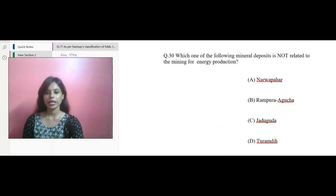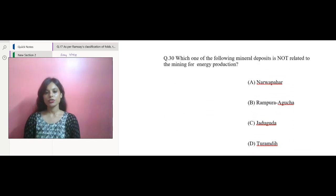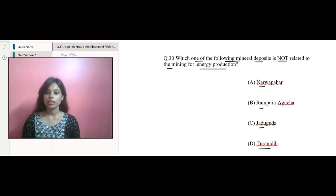Let's move to the next question. Which one of the following mineral deposits is not related to mining for energy production? We have Narwapahar, Rampura Agucha, Jaduguda, and Turamde. Your correct answer would be Rampura Agucha. This is one of those mineral deposits where it is not related to mining for energy production. This is the mineral deposit.